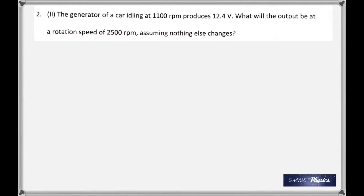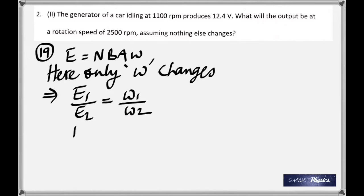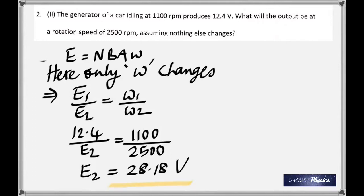That takes us to the second question. The generator of a car idling at 1100 rpm produces 12.4 volts. What will be the output at a rotation speed of 2500 rpm, assuming nothing else changes? In an AC generator, we know that the EMF produced depends on the number of turns, the strength of the magnetic field, the area of the coil, and the speed of rotation. But in this case, nothing else changes—it's only the angular speed that changes. So we can take this as a ratio. We know that EMF depends on N, B, A, and ω. Only ω changes, therefore we can say E1/E2 = ω1/ω2.